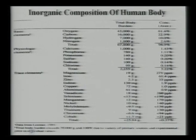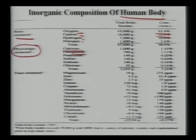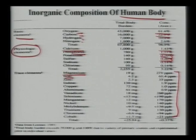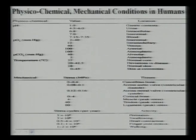Before understanding the biological response of materials, it is important to know the inorganic composition of the human body. Basic elements: oxygen is around 61.4 percent, carbon is 22.9 percent. Physiological elements: calcium is around 1.40 percent, phosphorus is 1.11 percent, potassium and sulfur are around 0.2 percent. Trace elements like magnesium, iron, and zinc are at the ppm level. Regarding physicochemical and mechanical conditions: pH varies depending on anatomical location — pH 1 for gastric content, 4.5–6 for urine, and 7.15–7.35 for blood.